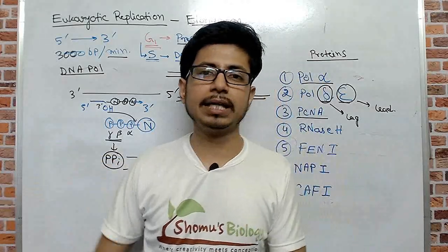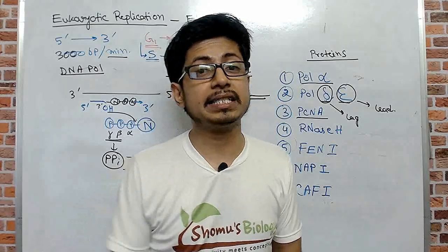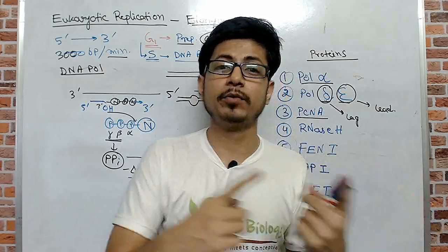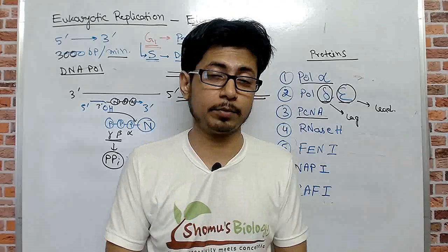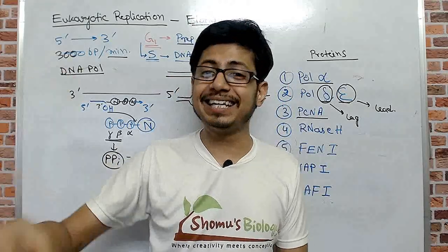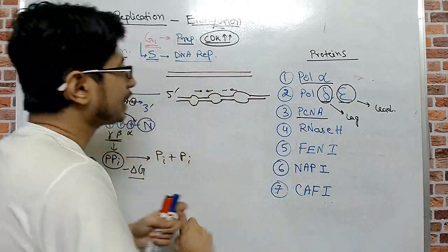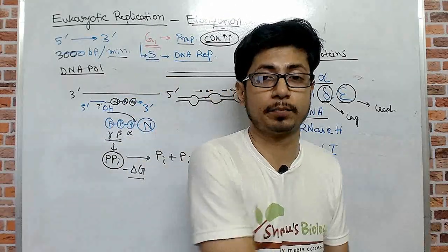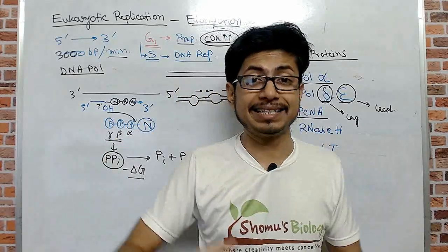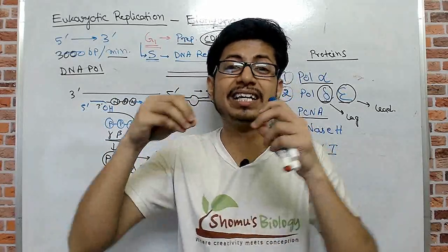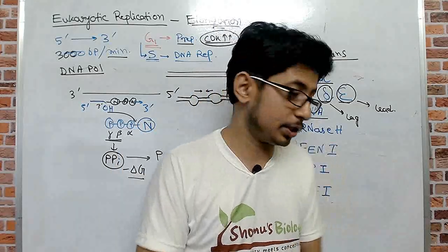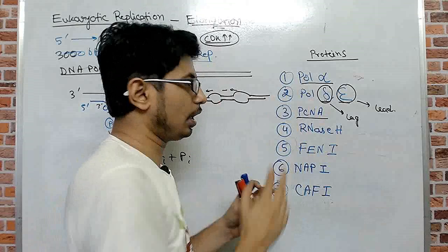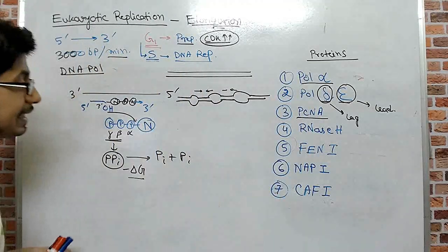In prokaryotes, the RNA primer added by primase is cleaved out by DNA polymerase I, which uses its 3 prime to 5 prime exonuclease activity, and the gap is filled by the same enzyme; then DNA ligase seals the nick. In eukaryotes, apart from primer removal, there is another big problem: the end replication problem, or telomere replication problem, which will be discussed in the next video on eukaryotic DNA replication termination. For now, we focus on how the RNA primer component is removed, and there are two processes: the RNase H method and the flap method.